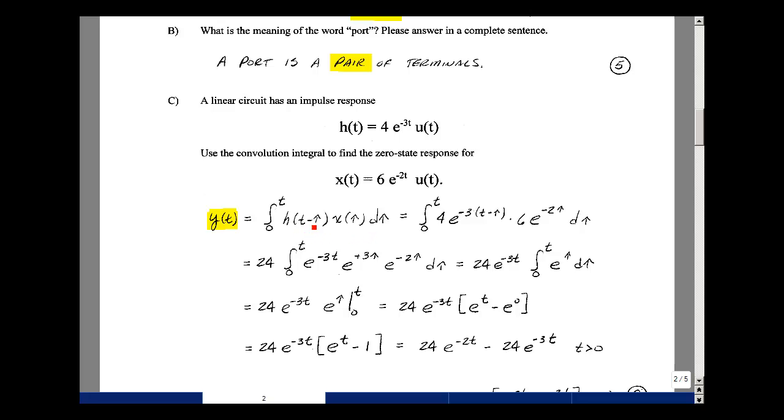We're going to replace t by t minus τ in our h(t). So I have 4 times e^(-3(t-τ)). And then for x(t), we have 6 times e^(-2t), replacing t by τ, and then dτ. Bring out the 6 times the 4, and then I have e^(-3t), e^(3τ), and then times e^(-2τ) dτ. I can pull out e^(-3t), it's not a function of τ, and then I can add these two exponents and get e^τ dτ. So the integral of e^(ax) is 1 over a e^(ax), and here a equals 1, so I just have e^τ, evaluated at the upper limit minus the lower limit.